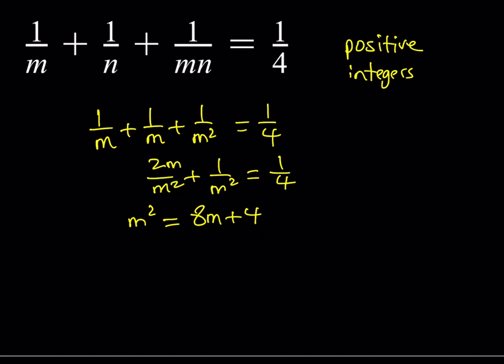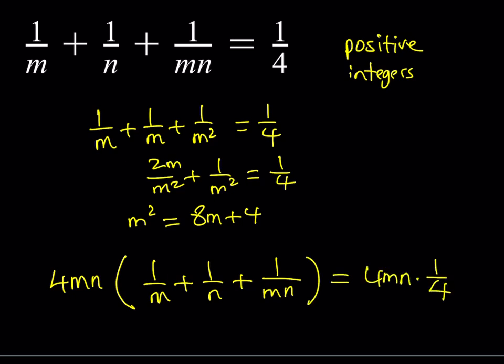Now how do we solve? Well, I want to get rid of all the fractions first. So let's multiply both sides by 4mn. If we do that and distribute, we should be able to get rid of all the fractions and everything should clear out. And when you multiply here, the reason why I use 4 is I want to get rid of the 1/4 as well. So this becomes 1.